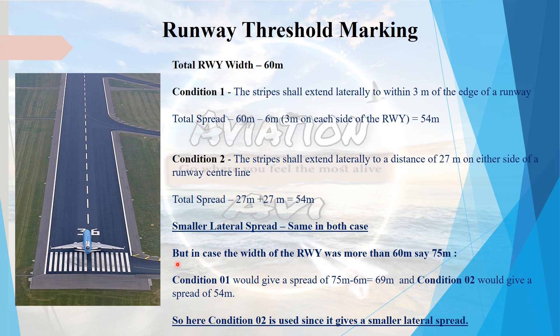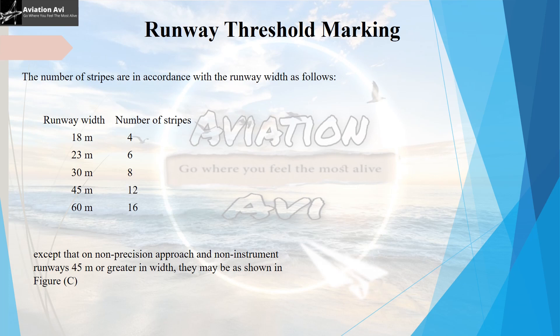Now if the runway width is more than 60 meters — say 75 meters — applying Condition 1 gives 75 minus 6 meters, which is 69 meters. Applying Condition 2 gives 27 plus 27 meters, which is 54 meters. Condition 2 gives the smaller lateral spread, so we paint the threshold marking 27 meters on each side of the runway centerline rather than 3 meters inward from the runway edge. The effective maximum width for painting threshold stripes is therefore 60 meters.